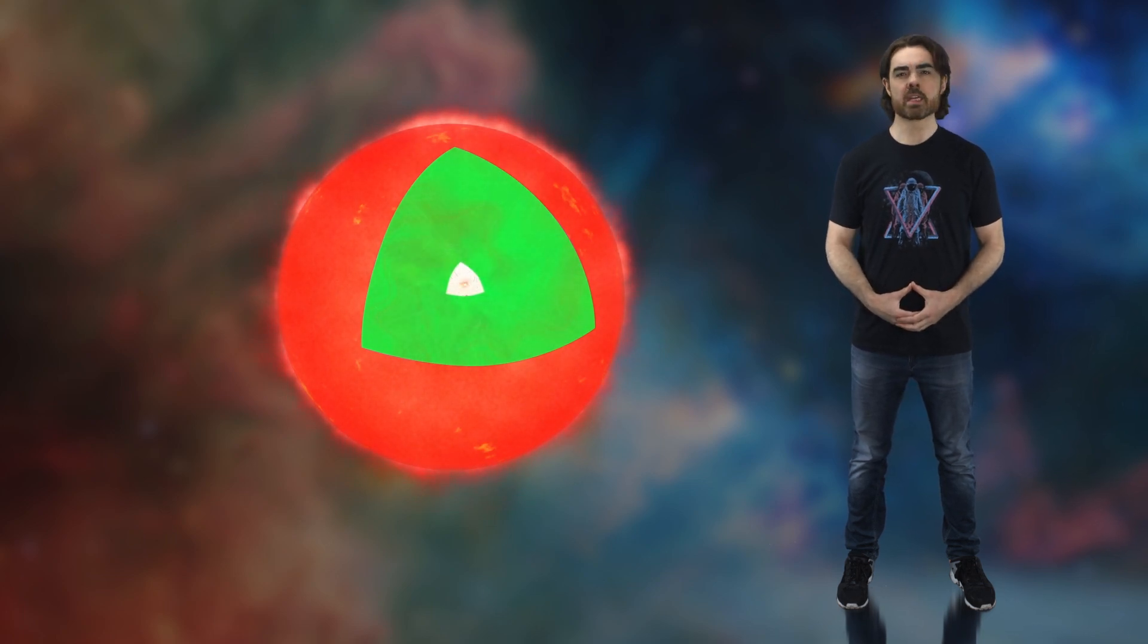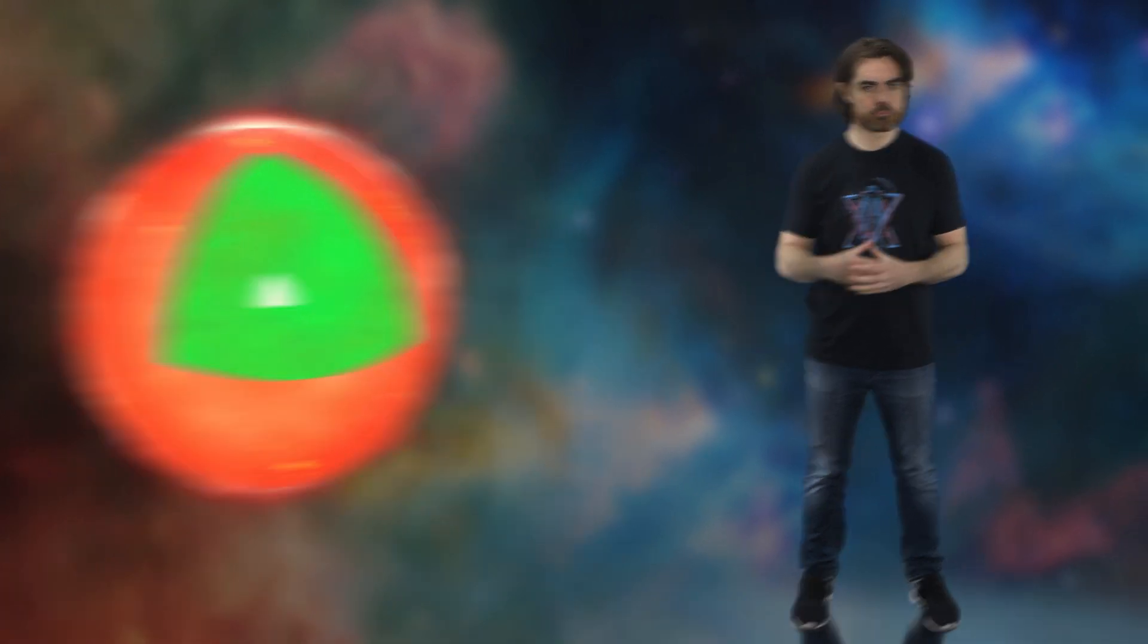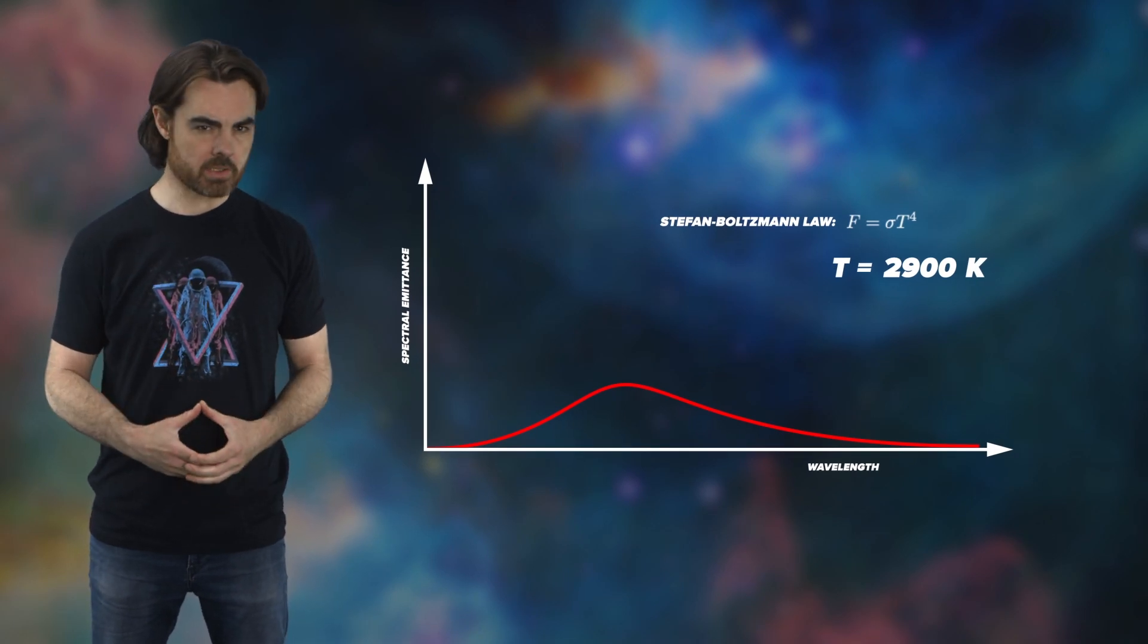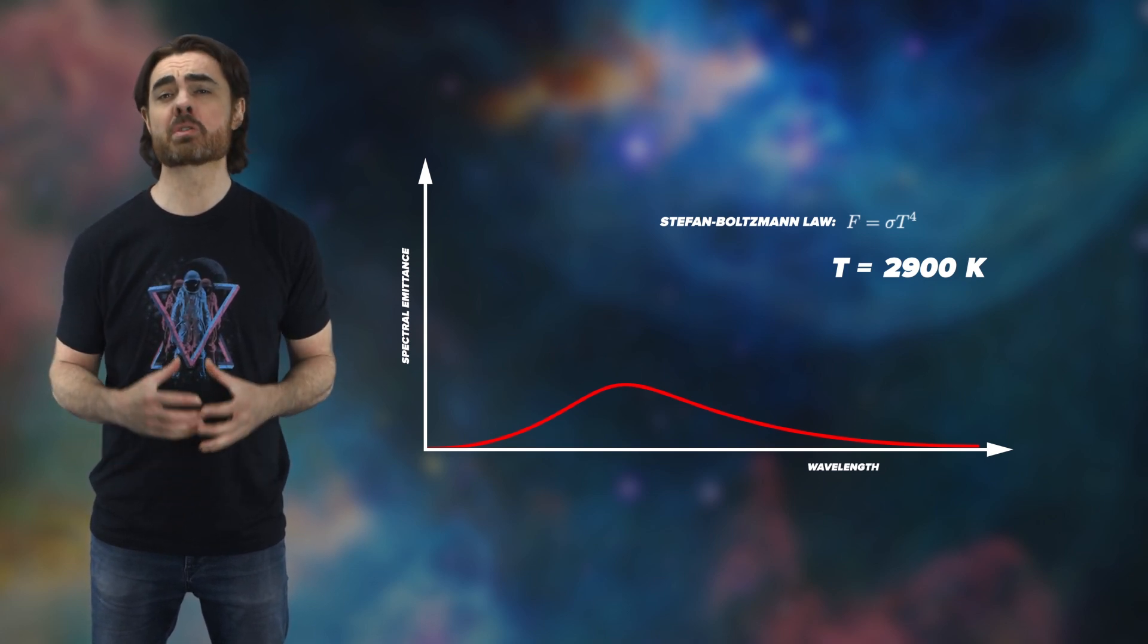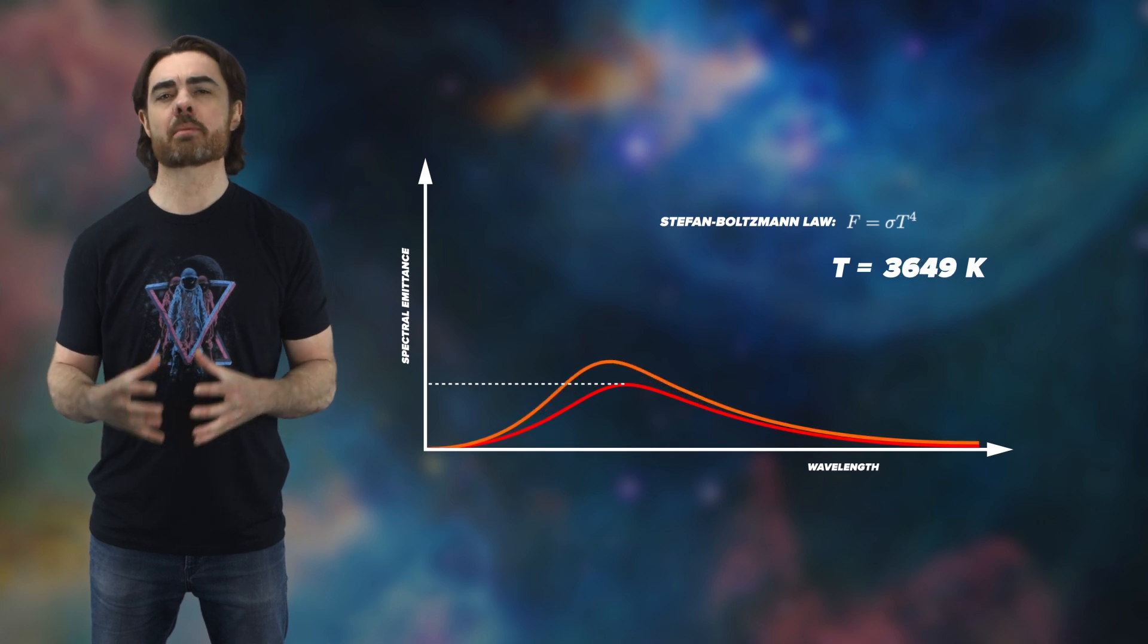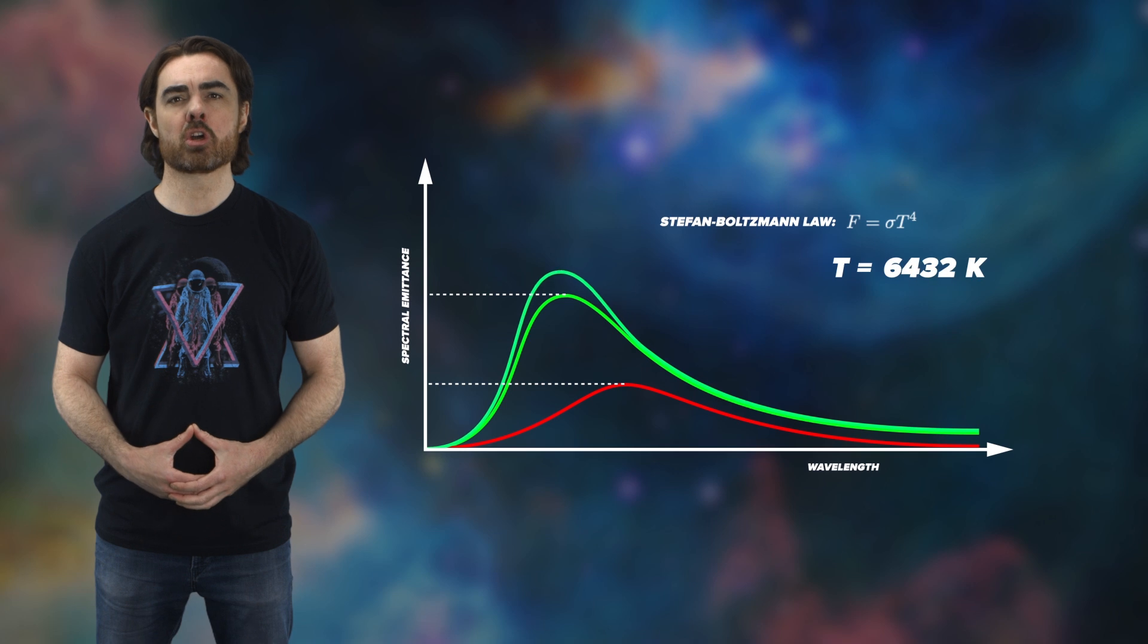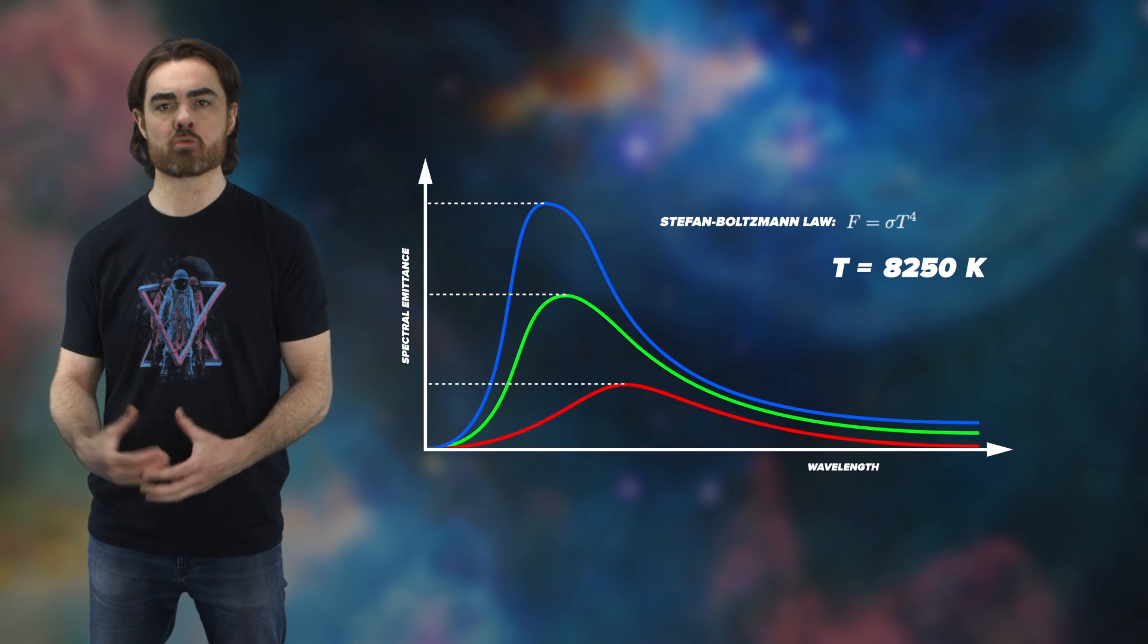An interesting thing about red dwarfs is they don't expand as they brighten, unlike more massive stars. If you increase the energy output but keep the size of the star the same, then you necessarily increase the surface temperature of the star. This is because the light produced by stars comes from the heat glow of their surfaces. This is thermal or black body radiation and obeys a couple of very strict laws. First, the hotter something is, the more thermal photons it produces. So increasing the surface temperature allows a red dwarf to shed all of those excess photons produced by its rising fusion rate.